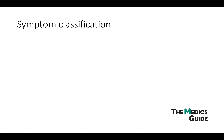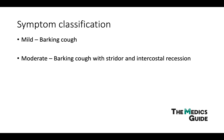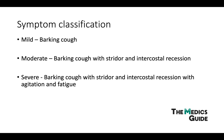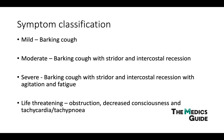We can classify these symptoms into mild, moderate and severe. Mild is essentially just the barking cough; moderate includes the full triad of symptoms; severe if you include agitation and fatigue; and life-threatening if there's decreased consciousness as well as tachycardia and tachypnea.